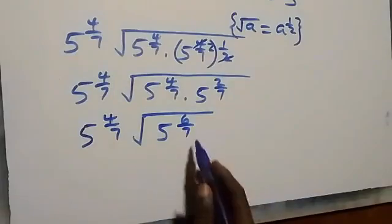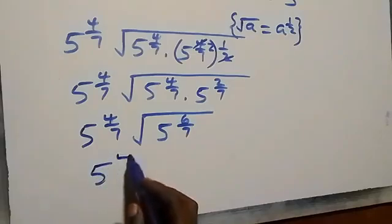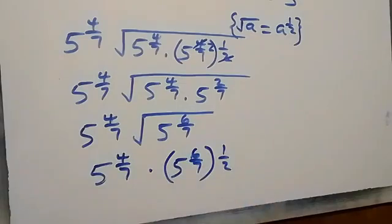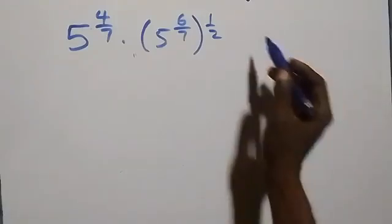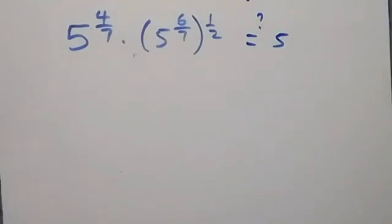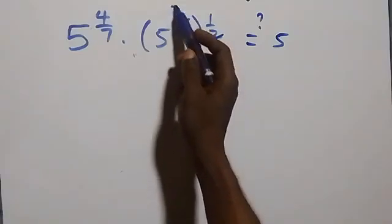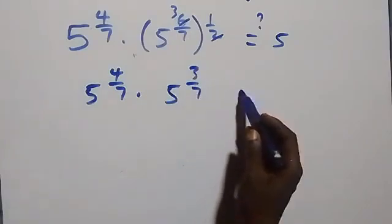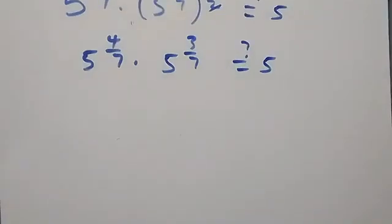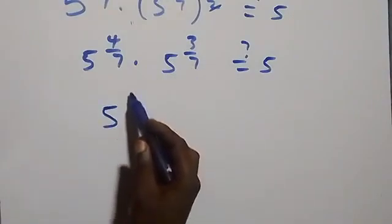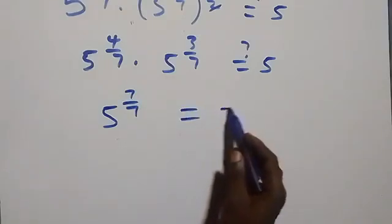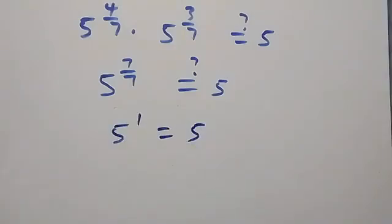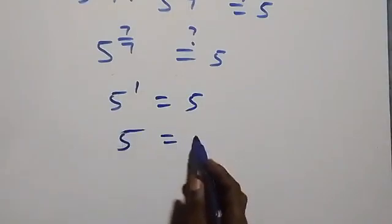We change the square root to raised to power one-half, giving 5 raised to power 4 over 7, times 5 raised to power 6 over 7, raised to the power of one-half. That power multiplies: we get 5 raised to power 4 over 7, times 5 raised to power 3 over 7. Adding the powers gives 5 raised to power 7 over 7. Since 7 over 7 equals 1, we have 5 raised to power 1, which is 5. Left-hand side equals right-hand side.